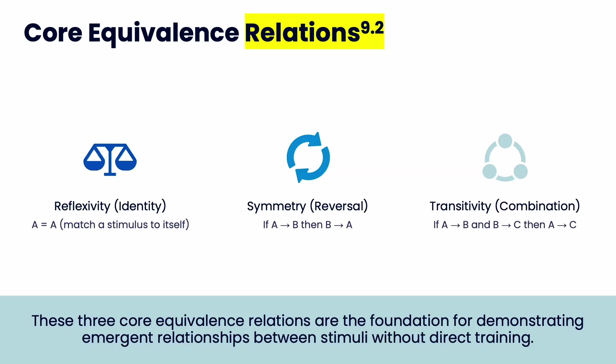There are core relations you need to know. The first is called reflexivity, which is identity — you can match a sample to itself. So if you have a picture of a butterfly and three other things, you can match one picture of a butterfly to another picture of a butterfly. It's an exact match. Any matching game where the pictures are the same is reflexivity.